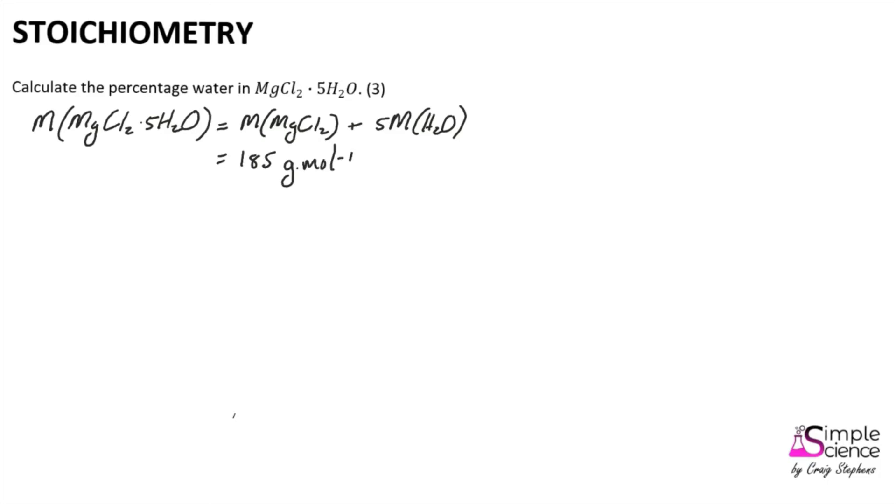Now, the question asked us to calculate what percentage of that molecule is water, and so we say the percentage water is equal to five times the molar mass of a water molecule over the molar mass of the entire molecule, that being magnesium chloride pentahydrate.